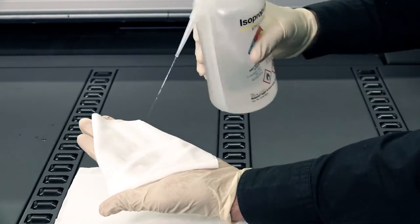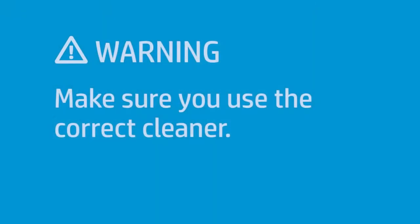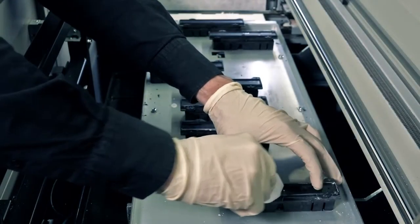Dampen a lint-free cloth with isopropyl alcohol. If you are in an area that regulates VOCs or volatile organic compounds for cleaning and maintenance fluids, use a VOC certified cleaner such as a properly diluted simple green all purpose cleaner.